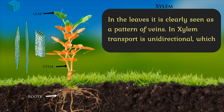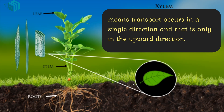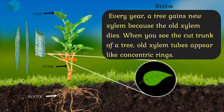In the leaves, xylem is clearly seen as a pattern of veins. In xylem, transport is unidirectional, which means transport occurs in a single direction — only in the upward direction. Every year, a tree gains new xylem because the old xylem dies. When you see the cut trunk of a tree, old xylem tubes appear like concentric rings.